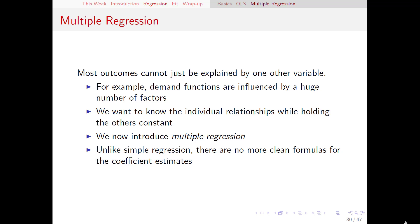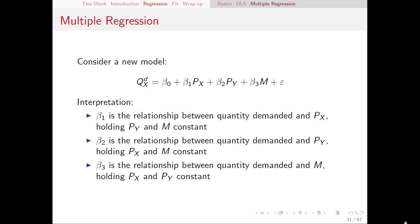Let's return to our example and think about a new model where instead of just PX, we've added two new explanatory variables. So QX is a linear function of the price of X itself (PX), but also the price of some other good PY, and M, the consumer's income. We no longer have a simple two-dimensional graph with a regression line — with four variables we have to think in four-dimensional space. But we can still think of beta 1, beta 2, and beta 3 as slopes with respect to each individual variable. For example, beta 1 tells us the relationship between PX and QX holding PY and M constant — changing only PX. This is our concept of ceteris paribus: all else equal, this is what happens when the price of X changes.